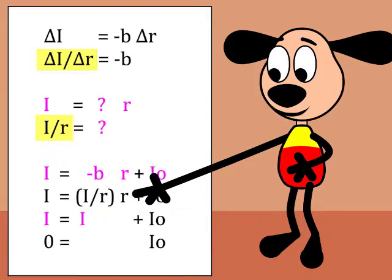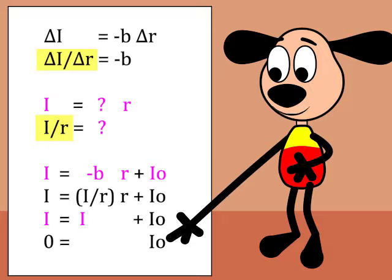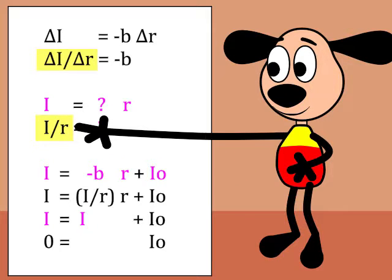And the interest rate cancels out, so it cannot affect investment. Autonomous investment must be zero. So how did economists confuse this with this?